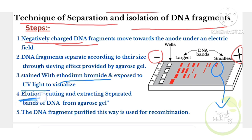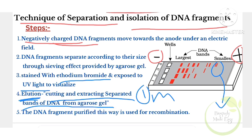The next step is elution — a very important term. Define elution: it is the process of cutting and extracting the separated bands of DNA from agarose gel. This definition will be asked for one mark.